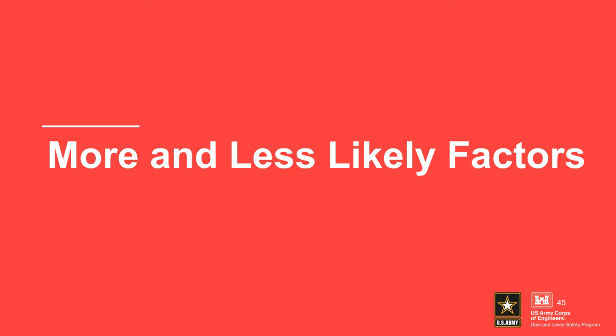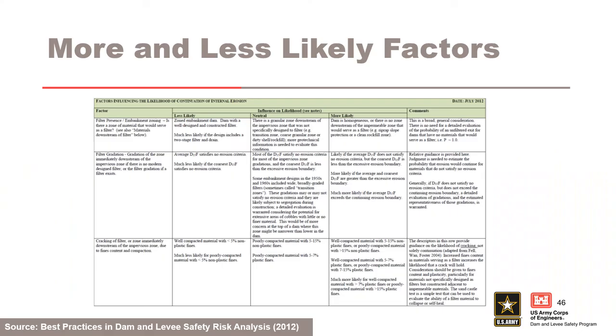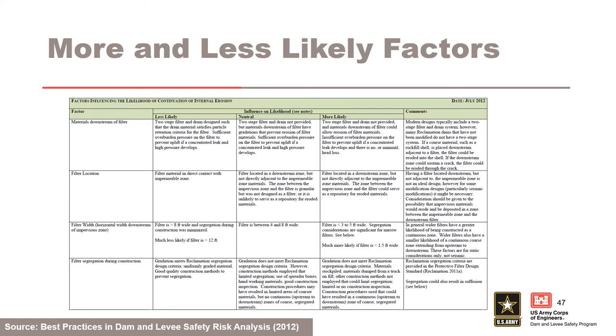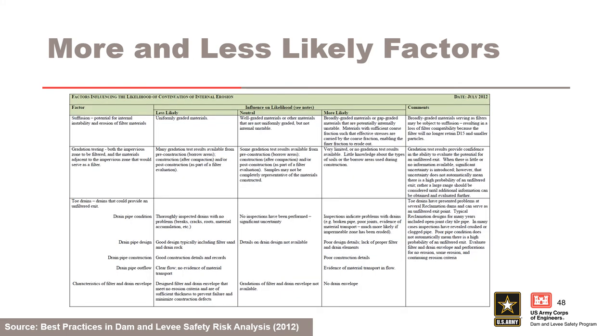More and less likely factors. The following table from the best practices manual can be used to help assess the likelihood of continuation of internal erosion. It can be used as a starting point, but the risk team must develop project-specific more likely and less likely factors to guide subjective probability estimation. The factors address filter presence and embankment zoning, filter gradation and cracking, materials downstream of the filter, filter location, filter width and segregation during construction, internal instability, gradation testing, and toe drains.